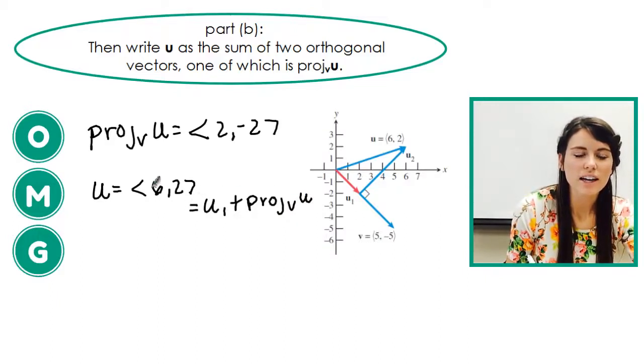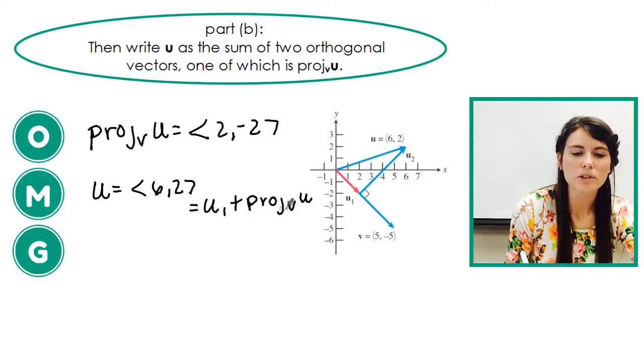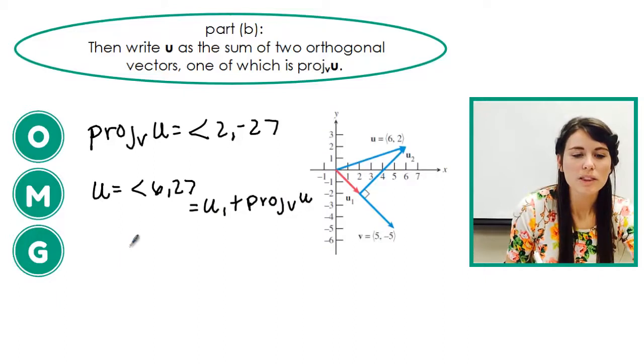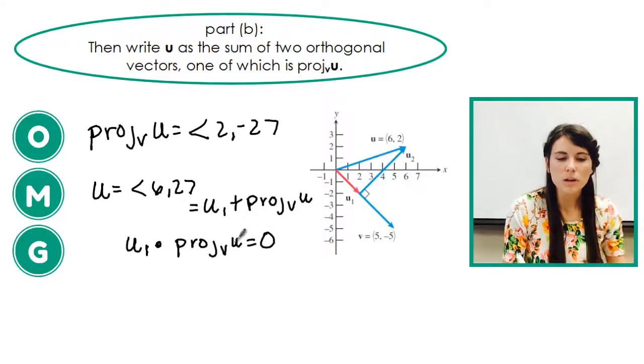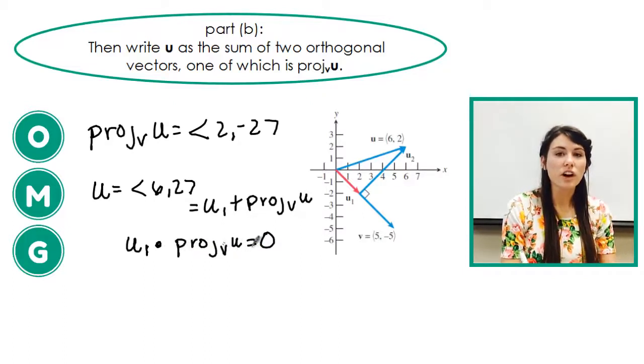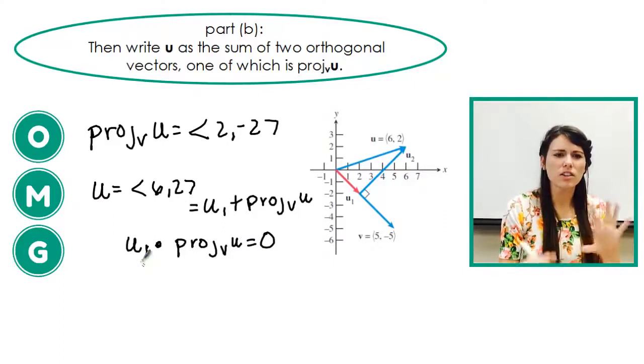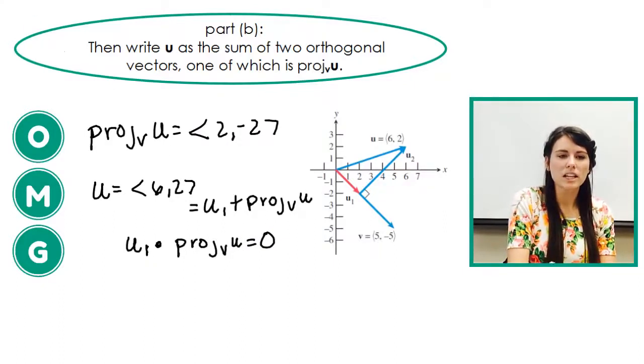If I add these together, can I get 6, 2. And these right here, u1 and the projection of u onto v, these need to be orthogonal. So what that means is u1, the dot product of u1 and the projection of v onto u needs to equal 0. So when I use dot product and I'm trying to figure out if things are orthogonal, their dot product has to equal 0. So this is all kind of a lot of information, but it's actually pretty simple. So let's talk about what that looks like.